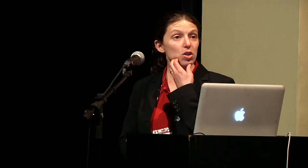Given this success story — an expensive success story, but a success story nonetheless — a number of people have asked whether there is an alternate approach to potentially cure HIV. One approach is to try to delete CCR5 in T cells in the absence of a bone marrow transplant. A couple of companies have been using what are called zinc finger nucleases to disrupt the CCR5 gene in autologous T cells.